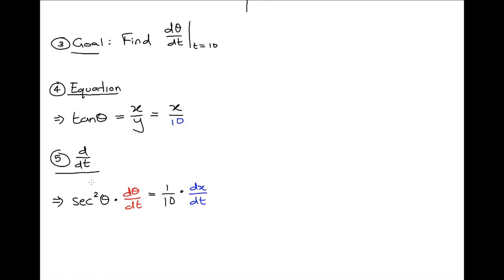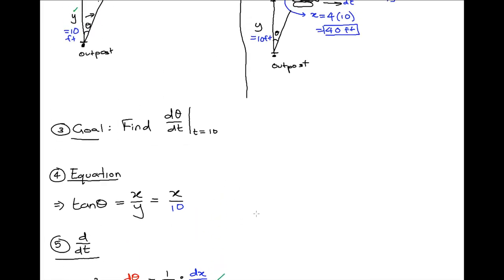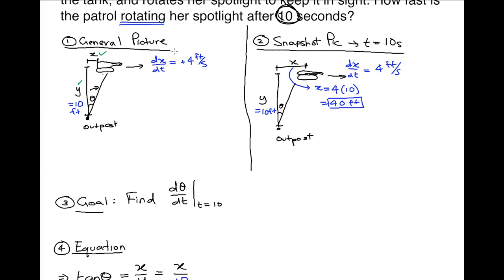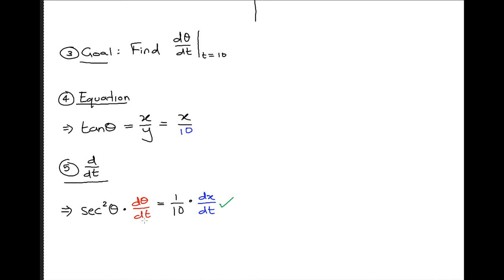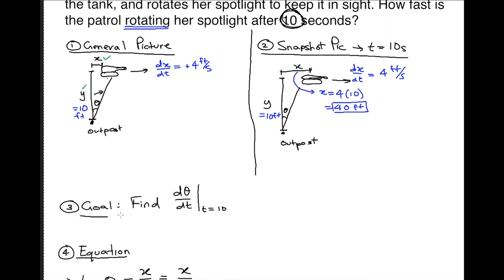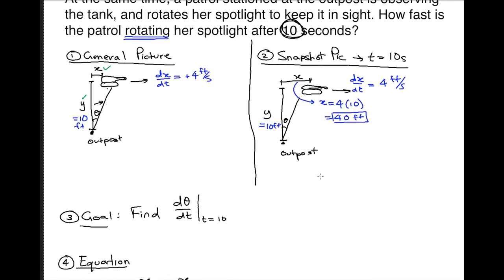Now let's figure out what we know and don't know. dx/dt I know — it's 4 feet per second. dθ/dt I don't know, but that's what I'm solving for, so that's fine. However, secant squared theta is something I don't actually know. So we need to go back to our snapshot picture to find that value.